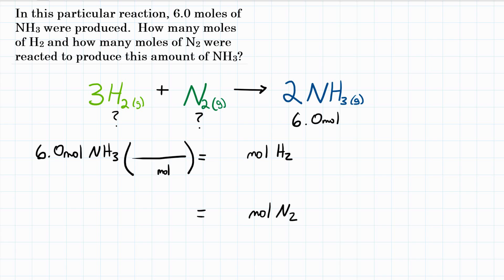To get rid of moles of NH3, that's going to be on the bottom of our conversion factor, and we want moles of H2 on top. To relate moles of H2 to moles of NH3, we look at our coefficients. For H2, the coefficient is 3, and for NH3, the coefficient is 2. That is our relationship — for every 3 H2s that react, we're going to get 2 NH3s.